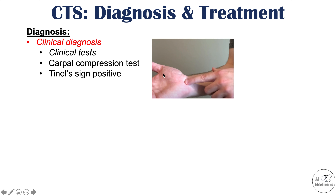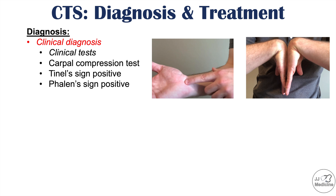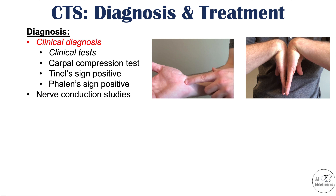Another clinical test is the Phalen sign, also referred to as inverted prayer. The clinician gets the patient to hold their hands together in a specific position, essentially compressing the median nerve in both hands. If they hold this for 60 seconds and symptoms are reproduced, that is a positive Phalen sign. The more standardized diagnostic method is nerve conduction studies to assess median nerve functioning.